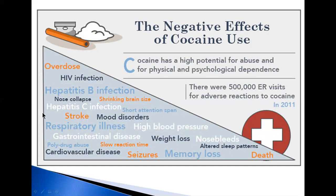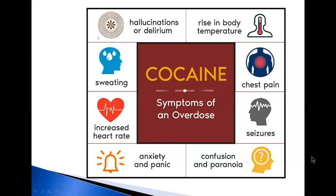On this slide, you can see the negative effects of cocaine abuse. A cocaine overdose occurs when a person uses enough of a drug to produce serious adverse effects, life-threatening symptoms, or death. An overdose can be intentional or unintentional. Death from overdose can occur on the first use of cocaine or unexpectedly thereafter. Many people who use cocaine also drink alcohol at the same time, which is particularly risky and can lead to overdose. Others mix cocaine with heroin, another dangerous and deadly combination.